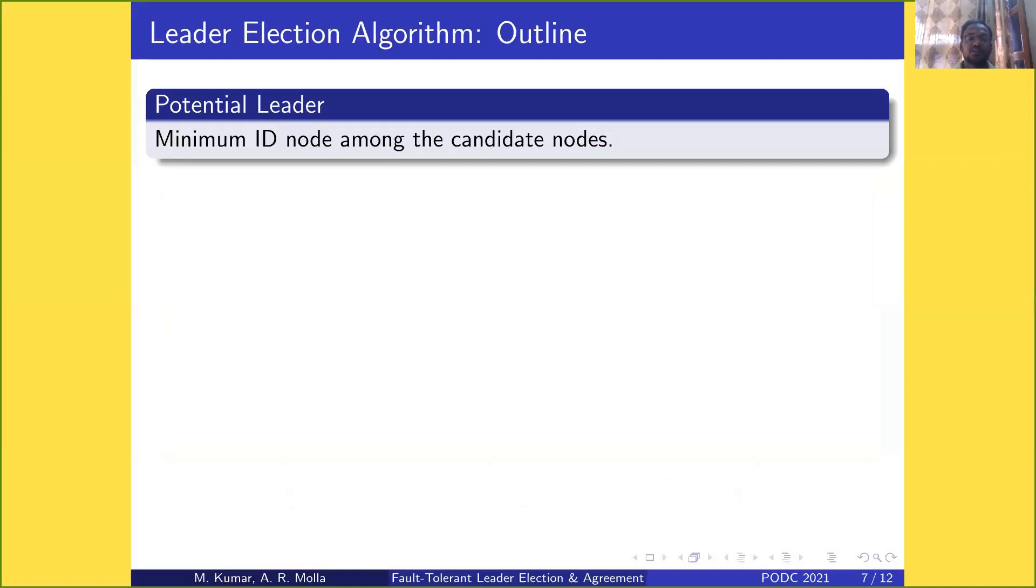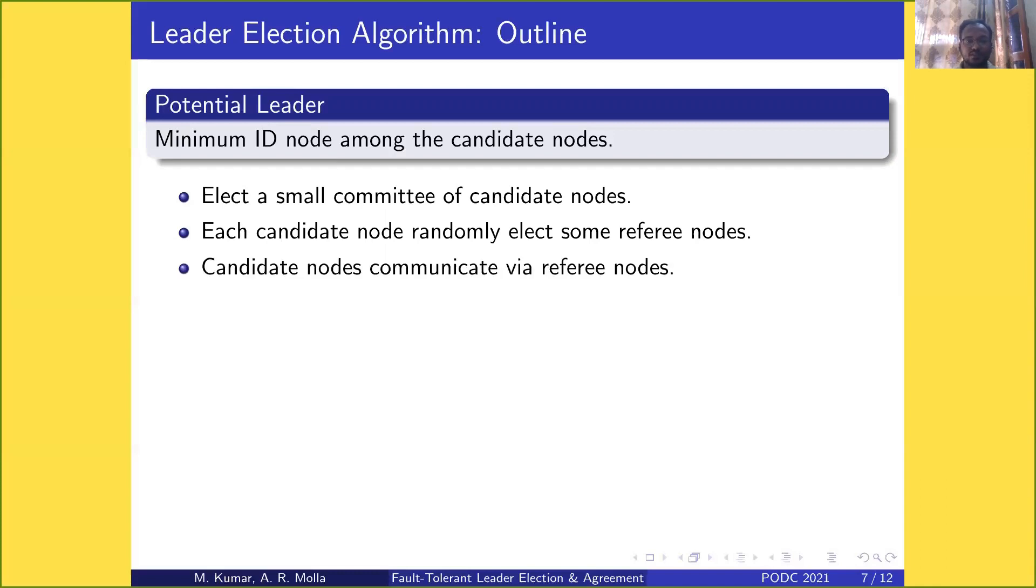The outline for the leader election algorithm: the minimum ID node among candidate nodes is the potential leader. IDs are selected randomly using private random bits. First, we elect a small committee of candidate nodes. These candidates randomly elect referee nodes, and communication between candidates happens via these referees.